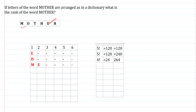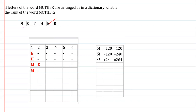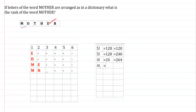By the time all words starting with ME are exhausted, 264 words will have been written. After E, the next alphabetical option for the second place is H. Fixing H second, we again have four slots arranged in 4! = 24 ways. Adding 24 to 264 gives 288.